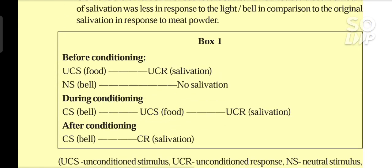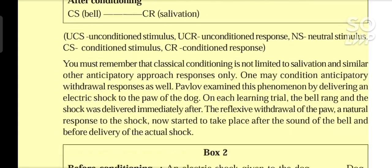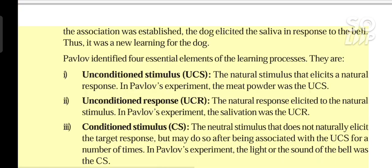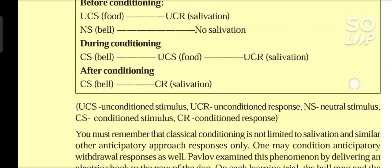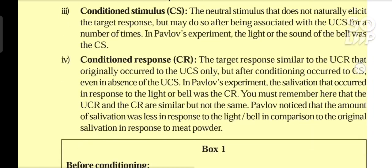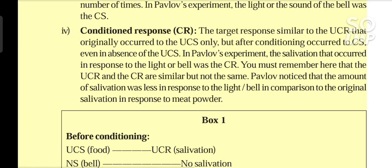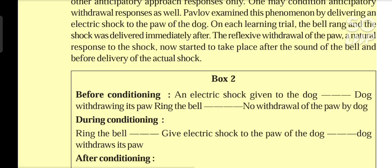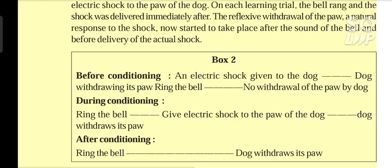Classical conditioning is not limited to salivation and similar anticipatory approach responses only. One may condition anticipatory withdrawal responses as well. Pavlov examined this by delivering an electric shock to the paw of the dog. On each learning trial, the bell rang and the shock was delivered immediately after. The reflexive withdrawal of the paw — a natural response to the shock — now started to take place after the sound of the bell and before delivery of the actual shock. Box 2: Before conditioning — electric shock given to the dog, dog withdraws its paw. Ring the bell — no withdrawal of the paw. During conditioning — ring the bell, give electric shock to the paw, dog withdraws its paw. After conditioning — ring the bell, dog withdraws its paw.